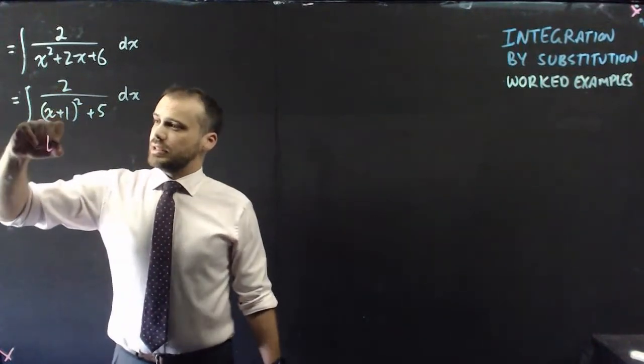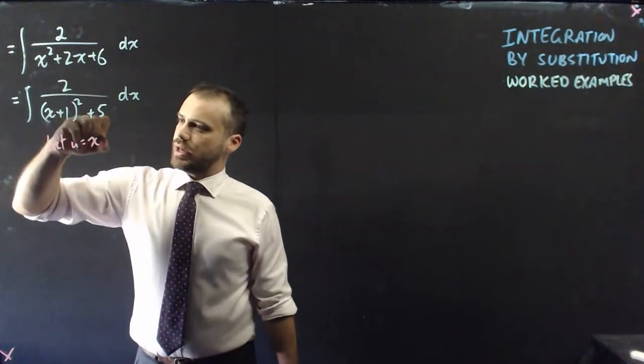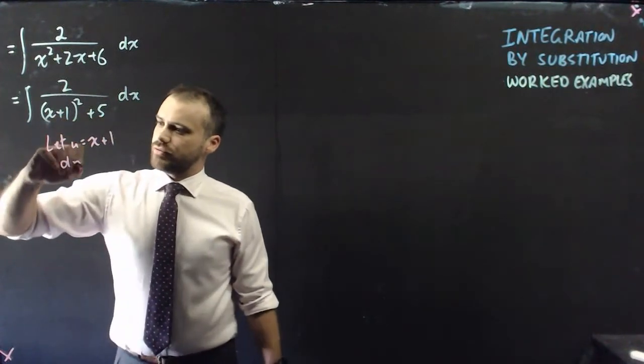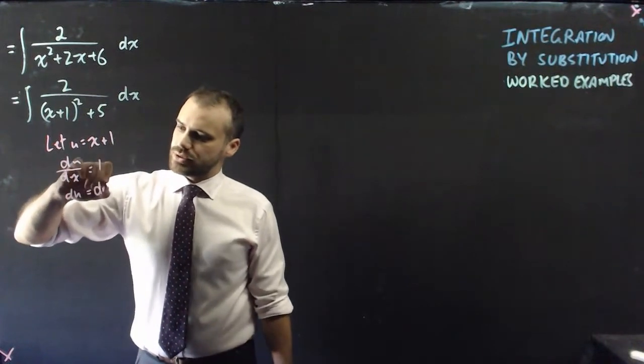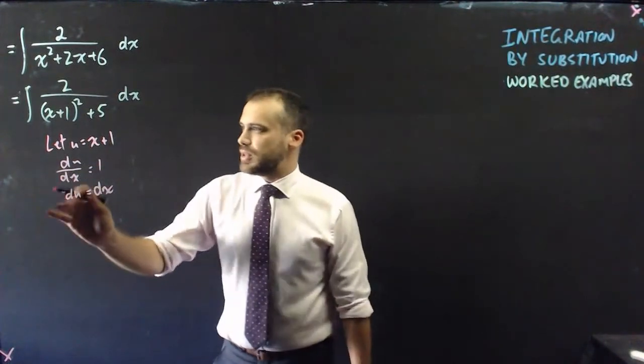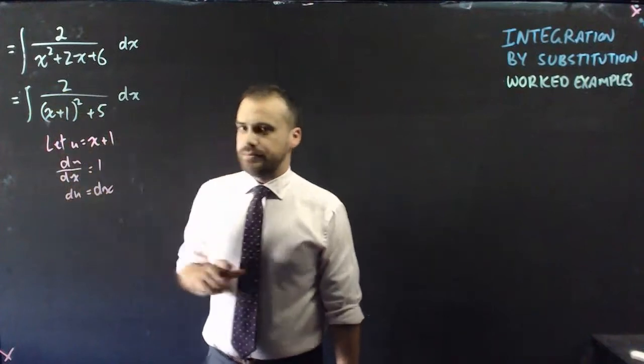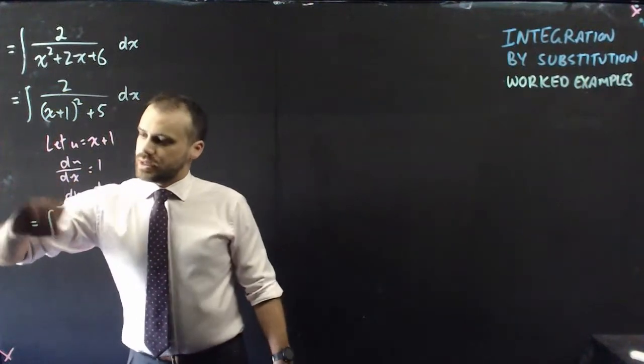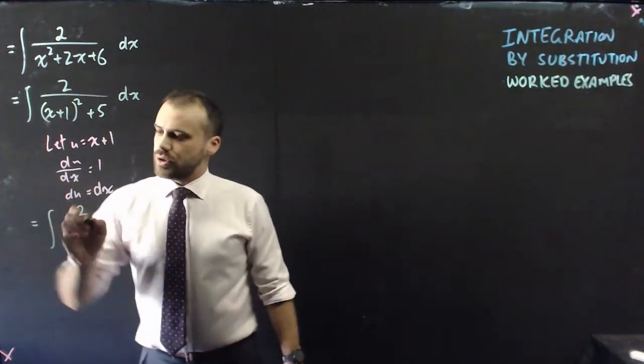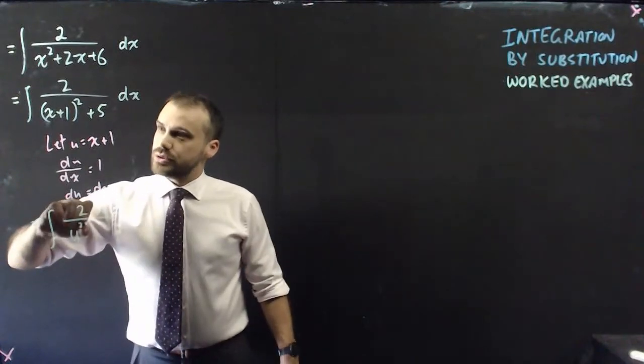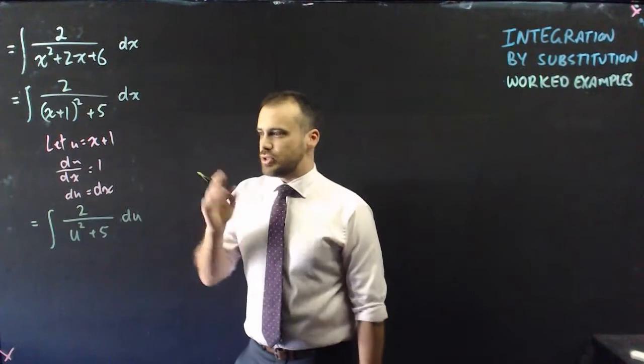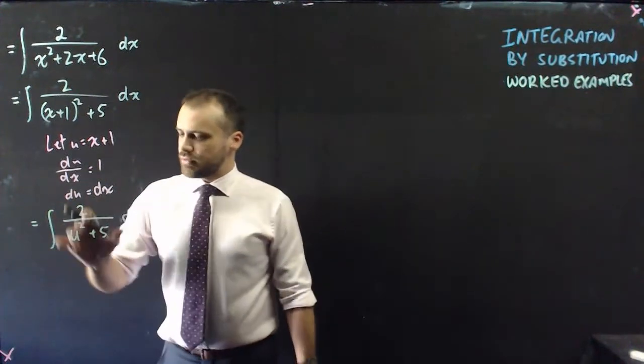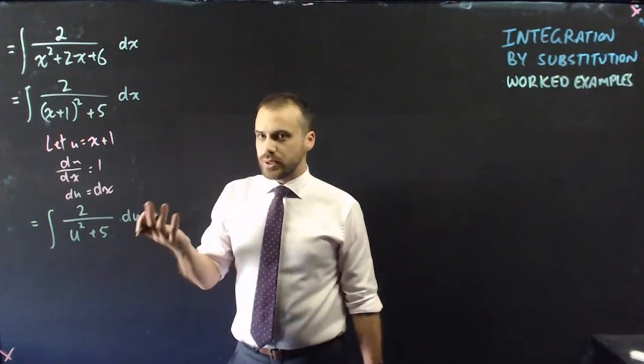All right, so let's let u equal x plus 1, the derivative of u with respect to x equals 1, which means that du equals dx. Now let's sub that and that into that. So we have integral, and it's 2 over u squared plus 5 with respect to u. Okay, so it's 2 over u squared plus 5. What are we going to do with that?